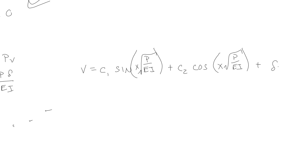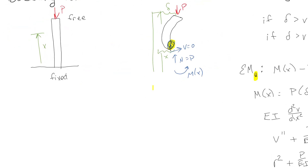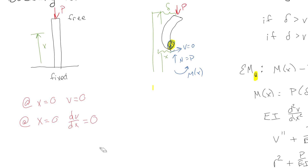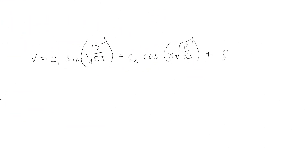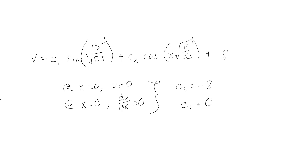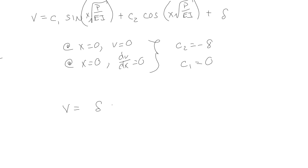Now we find our initial conditions. It's fixed at the base, so at x=0 we know v=0, and also at x=0 the slope dv/dx=0. Applying those conditions, we get C₂ = negative delta and C₁ = 0, giving us the displacement equation: v = delta times (1 minus cos(√(P/EI)·x)).